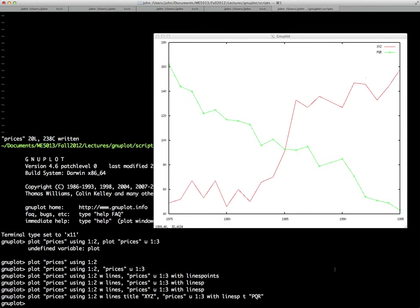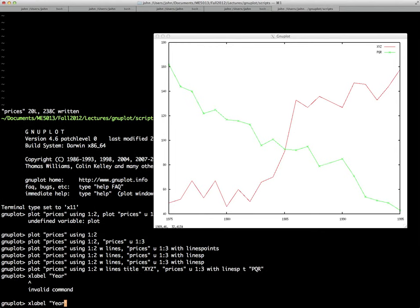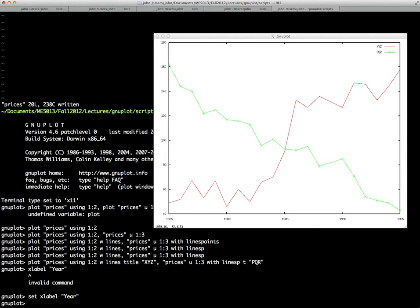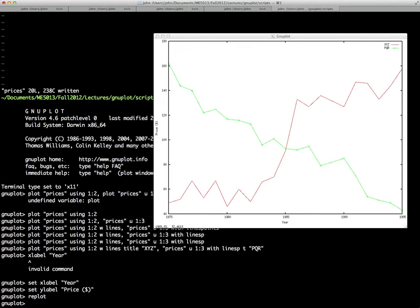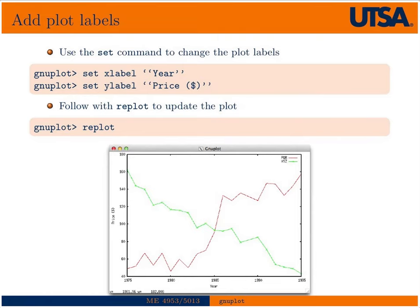So we can also then label our plot. So if you wanted to give it an X label, label the abscissa axis, we could say year. I'm sorry, we need to use the set command. So we'll say set X label year, set Y label price in dollars. Now you notice just simply doing that doesn't change anything. We actually have to run the command replot, which will rerun the last plot command with all the new settings. So in this case, if we run replot, then we get year and price as well in our plot. So this slide here just summarizes that.